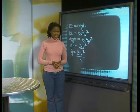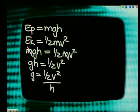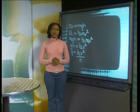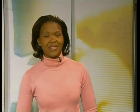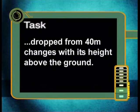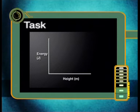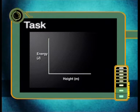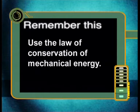Now I want you to investigate another relationship involving the mechanical energy of falling objects. Here's your task for today: draw a graph to show how the kinetic energy and the gravitational potential energy of a ball dropped from 40 meters changes with its height above the ground. In this graph, the independent variable is the height of the object above the ground, drawn on the horizontal axis. Energy is the dependent variable and is drawn on the vertical axis. Use your graph to describe the relationship between kinetic energy and height. Remember, you can use the law of conservation of mechanical energy to find any unknown values you may need.